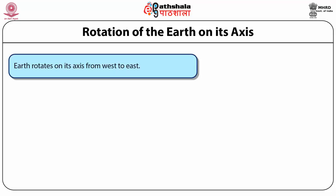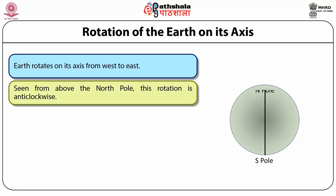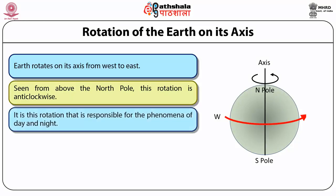This module is the last in positional astronomy, where we discuss the motion of stars as seen by observers at various locations. We know that the Earth rotates on its axis from west to east, completing one rotation in 24 hours. Seen from above the North Pole, this rotation is anti-clockwise, and it is this rotation that is responsible for the phenomena of day and night.